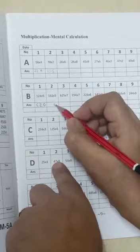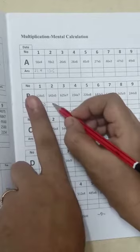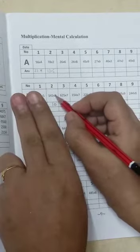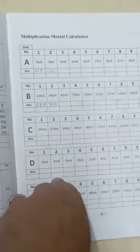5 twos are 10, 0, 1 carry forward. 5 fours are 20 plus 1, 21. 1, 2 carry forward. 5 ones are 5 plus 2 is 7. 710.